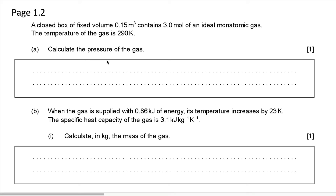A closed block of fixed volume, 0.15 cubic meters, contains 3.0 mol of an ideal monatomic gas. The temperature of the gas is 290 K. Calculate the pressure of the gas.